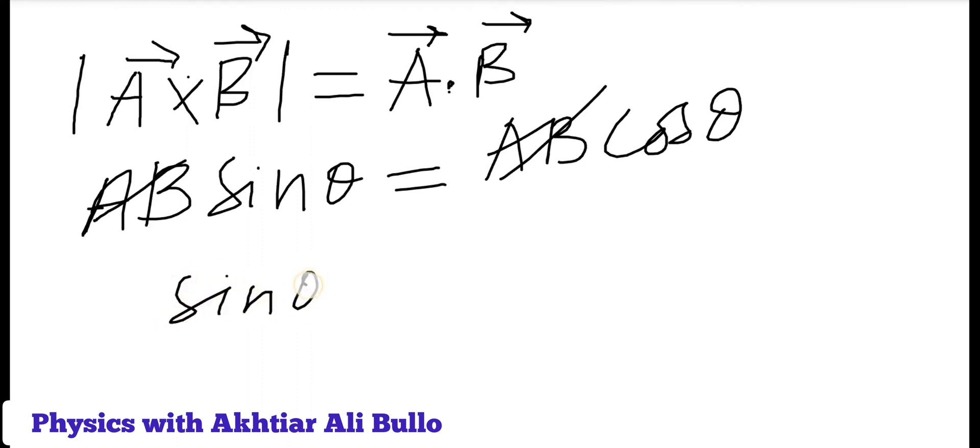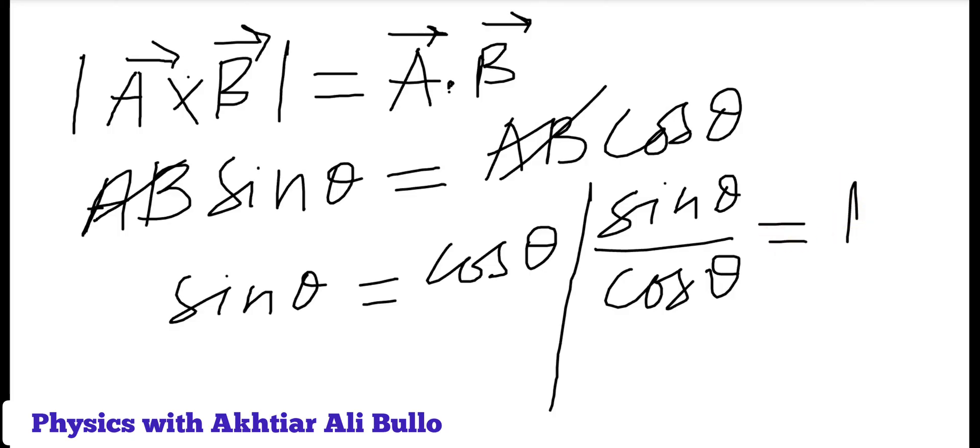will be equal to cos θ. We can also write this equation as sin θ upon cos θ is equal to 1. As we know that sin θ upon cos θ is equal to tan θ, sin θ upon cos θ